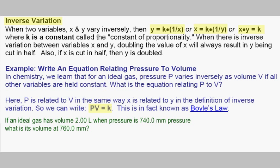Now let's put some numbers to this type of problem. Let's say we have an ideal gas with volume of 2.0 liters when the pressure is 740 millimeters of mercury. Then we want to answer the question, what will the volume be when the pressure is increased to 760 millimeters of mercury?